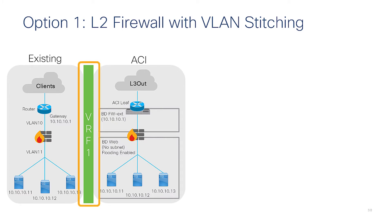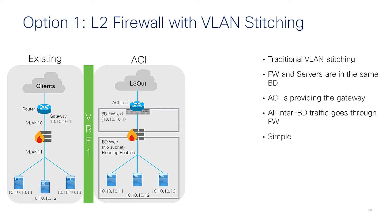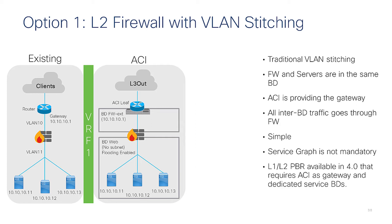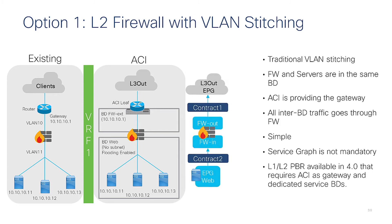In ACI you create a VRF with two bridge domains, and the default gateway would be in ACI behind the firewall — specifically the BD firewall-external with the IP address that serves as the default gateway for the servers. This is traditional VLAN stitching — simple. You could also improve this by using ACI service graph with PBR redirect, which is not a one-to-one mapping but is more interesting in terms of features for inserting a layer one/layer two firewall. The EPG and contract details are shown here.